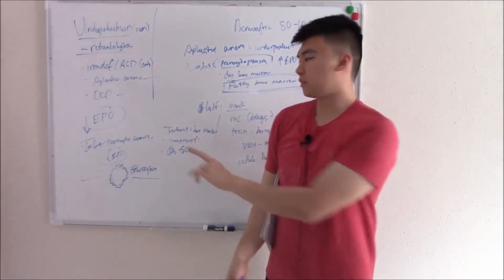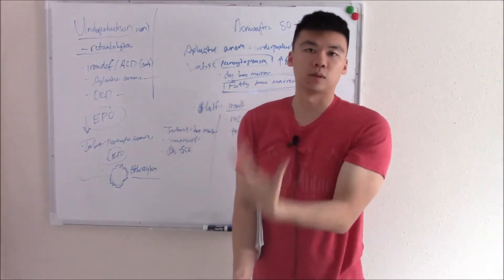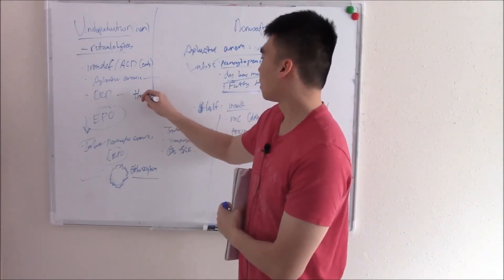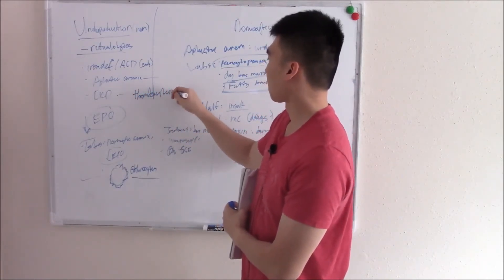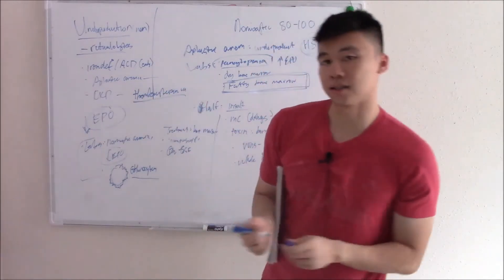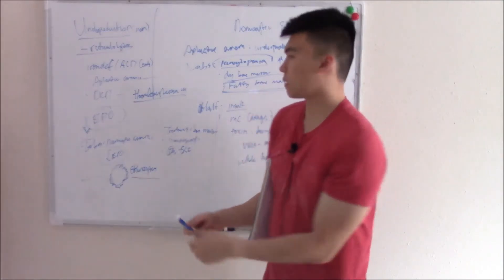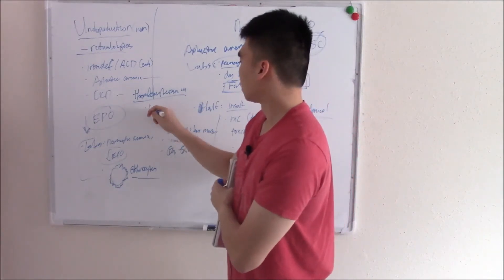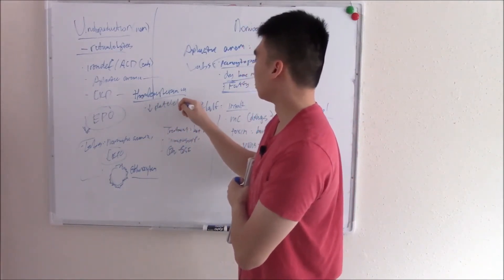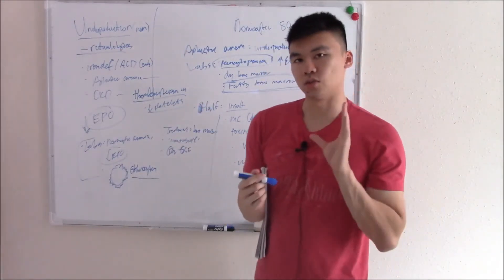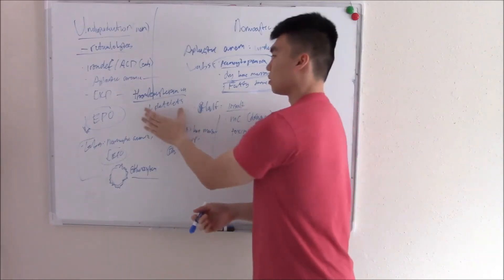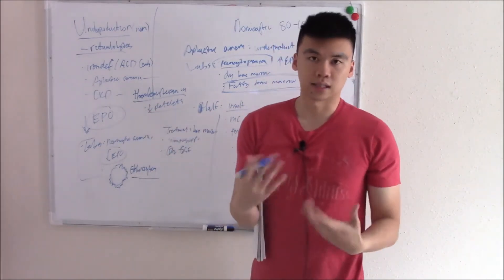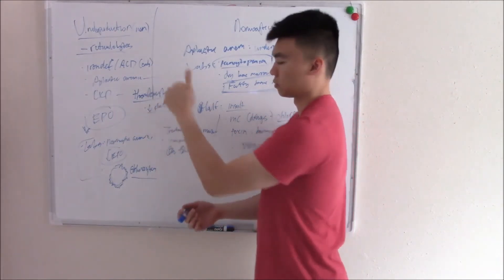An important note: decreased EPO doesn't just cause decreased red blood cells. In chronic kidney disease, a prominent finding is thrombocytopenia — low platelets. If the kidneys can't clear toxins, toxic metabolites build up and are very toxic to platelets, leading to bleeding disorders. If you do dialysis and clear those toxins, platelet counts will go back up.